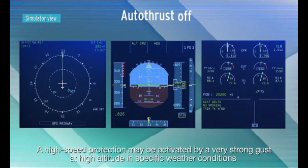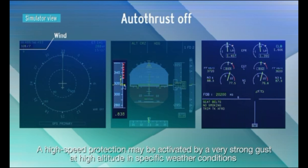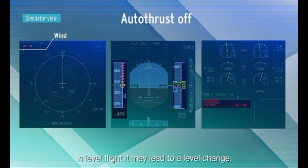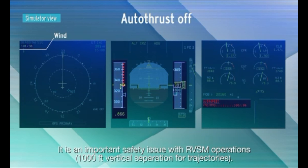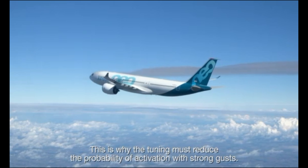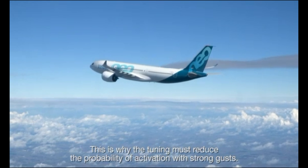A high-speed protection may be activated by a very strong gust at high altitude in specific weather conditions if design precautions are not taken. In level flight, it may lead to a level change. It is an important safety issue with RVSM operations, which require 1,000 feet vertical separation for trajectories.